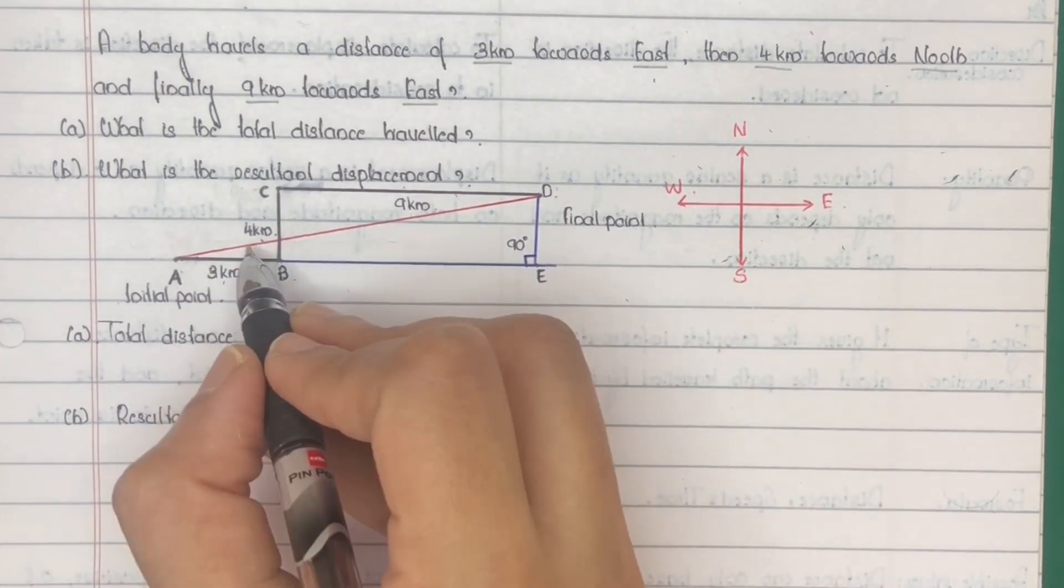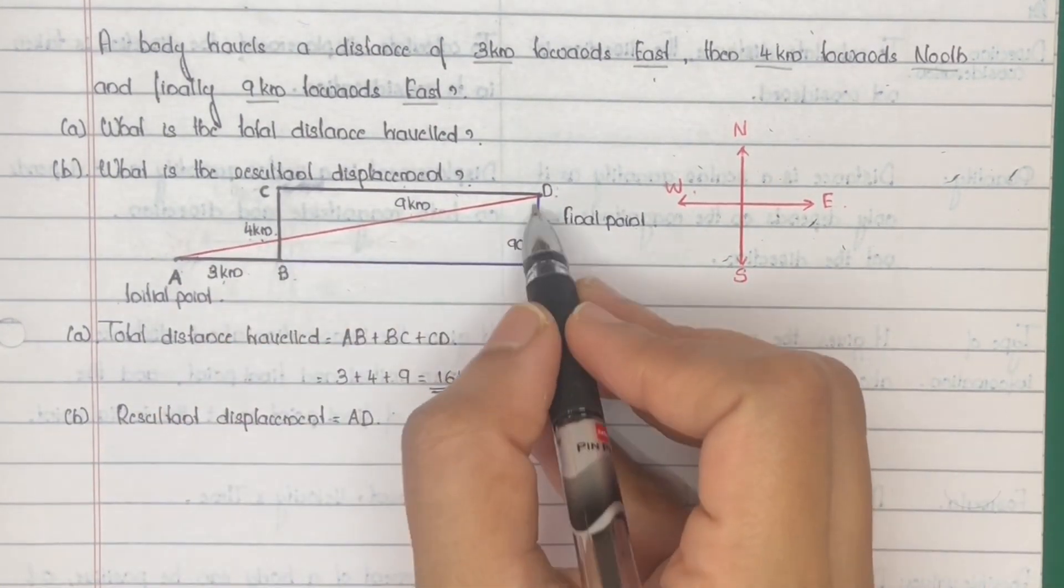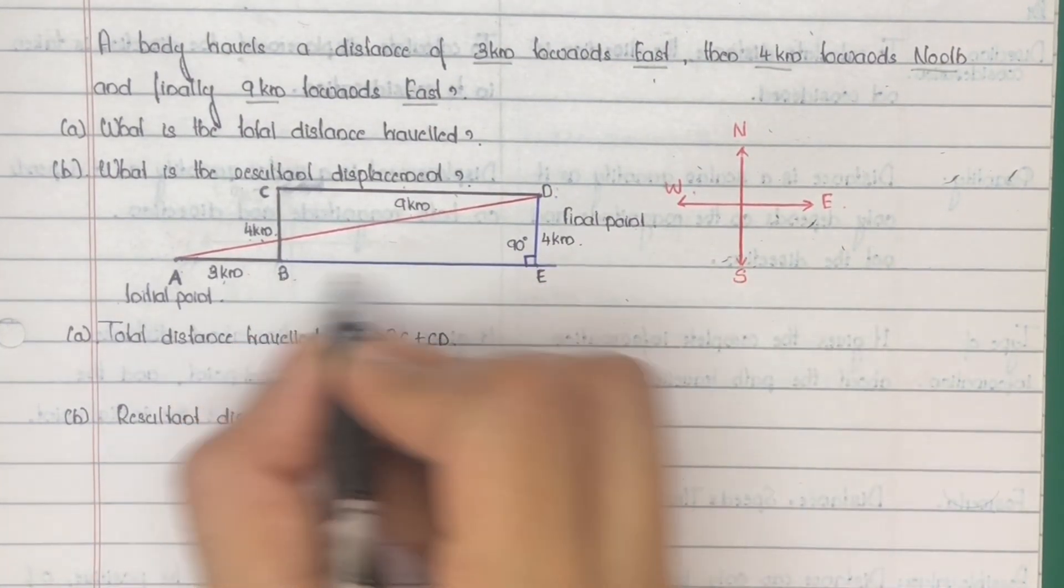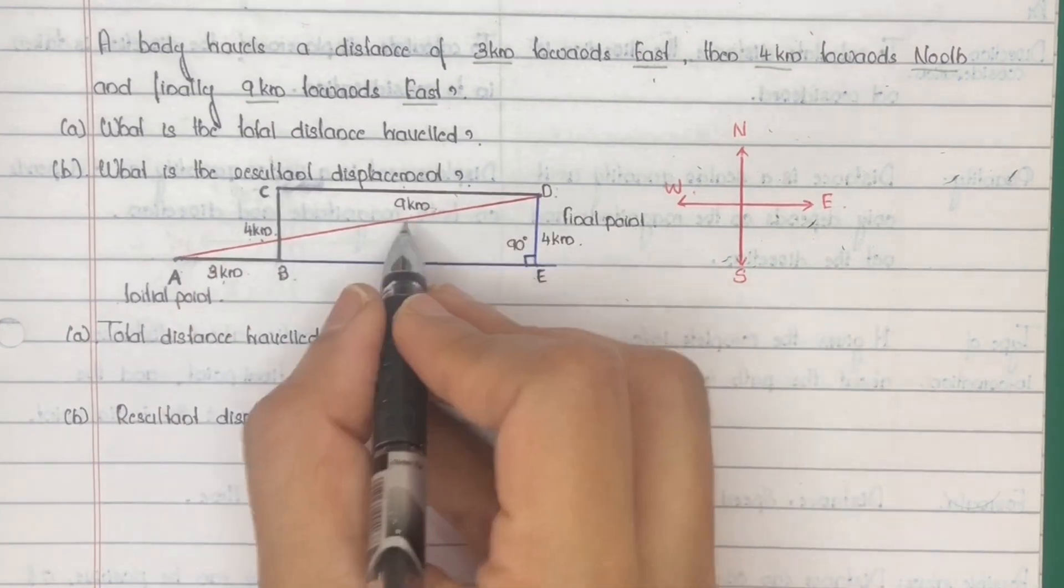And this length is equal to 4 km, the perpendicular distance, so 4 km. And BE is equal to CD, that is 9 km.